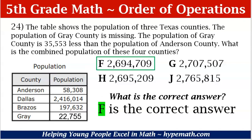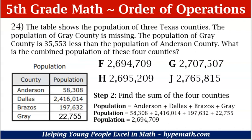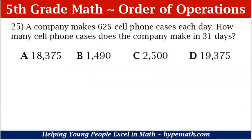Let's move to problem number 25. These problems are in our 5th grade math review workbook — the link will be in the description box. Number 25: A company makes 625 cell phone cases each day. How many cell phone cases does the company make in 31 days? A: 18,375. B: 1,490. C: 2,500. D: 19,375.